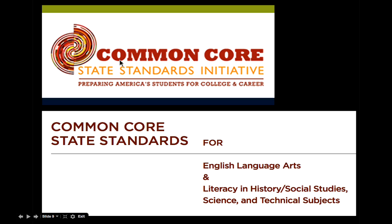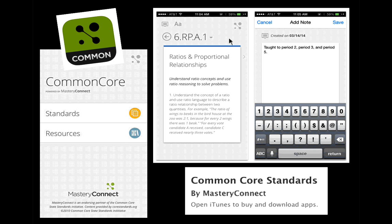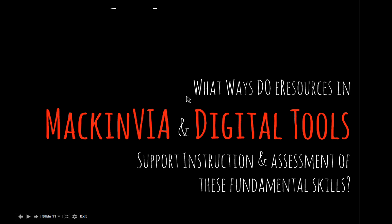The last standards we'll look at are the Common Core State Standards. Even though every state doesn't have them, this is something a lot of us need to think about — especially the English language arts standards, as well as those for history, social studies, science, and technical subjects. One tip: instead of the 80-page document, I use the Common Core app from Mastery Connect. It makes finding things so much easier, and you can even add notes while planning with teachers or for your kids.